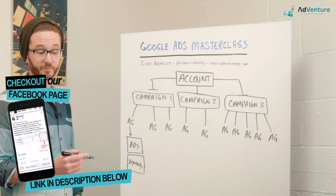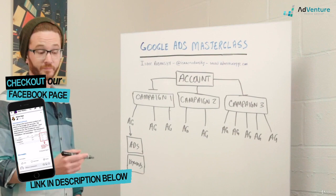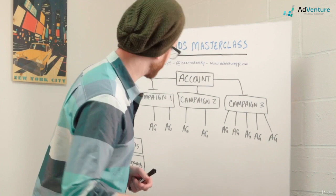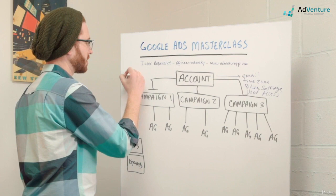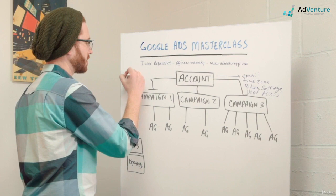If you're missing one of those two things, then nothing will function inside those ad groups. At the campaign level, you're dealing with things like location targeting. That's a big one. Where these ads are going to show up. You're dealing with ad scheduling, ad schedule.